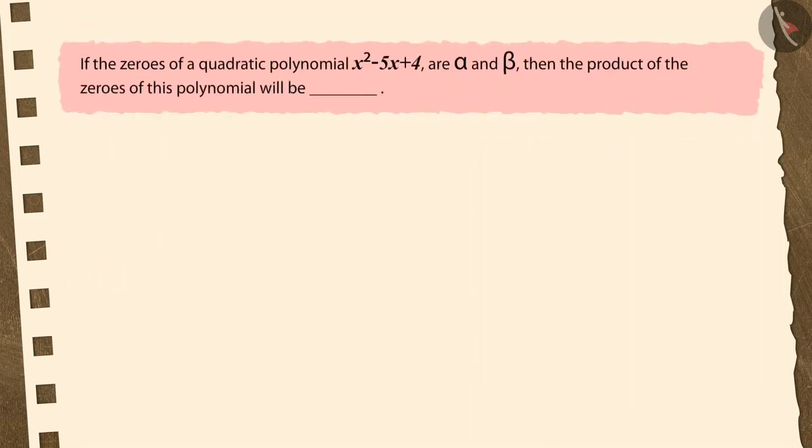Let us now see one more question. If the zeros of a quadratic polynomial x-square minus 5x plus 4 are alpha and beta, then what is the product of the zeros of this polynomial? Options: 5, minus 5, minus 4, 4. To solve this question, pause the video and then match your answer.